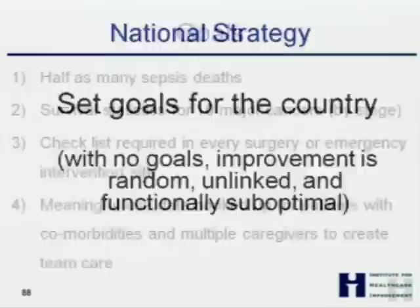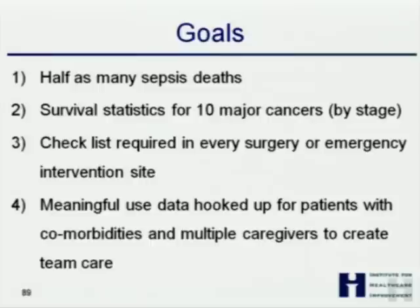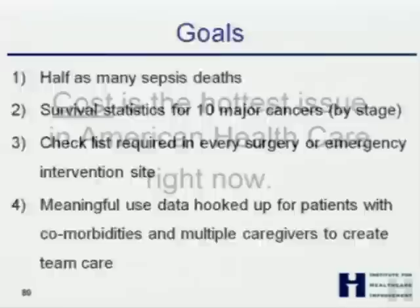As I say in the book, healthcare will not reform itself. So we need goals. We need half as many sepsis deaths in America — we could do that. We need survival statistics for the ten major cancers so people can make choices based on the best care systems for their survival. We need checklists in every surgery and emergency intervention site so that people do systematic, programmatic care. We need meaningful use data hooked up and focused on creating team care — the meaningful use levers are there, they're huge, and there's a lot of money attached.